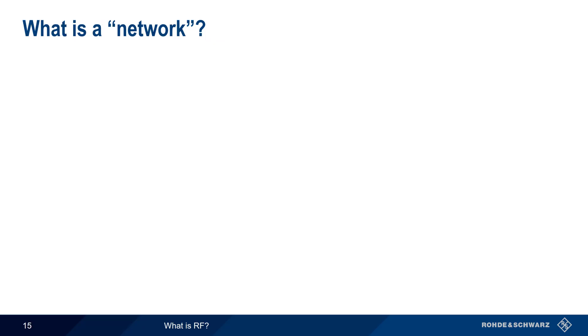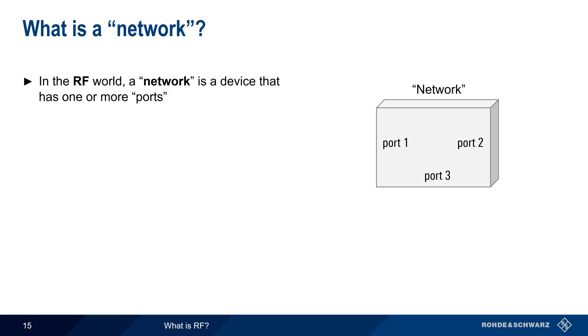In some cases, we can think of our device under test as something called a network. In the RF world, a network is a device that has one or more ports, each of which can pass, reflect, and or absorb radio frequency energy. These are usually components in a system, and the typical cell phone has many components that can be described as a network.